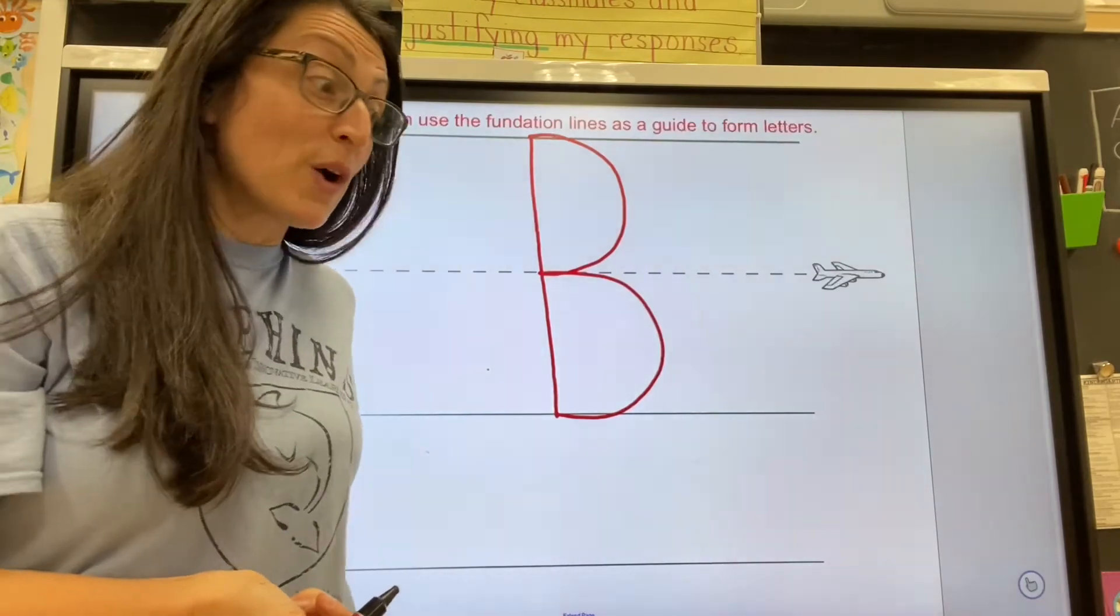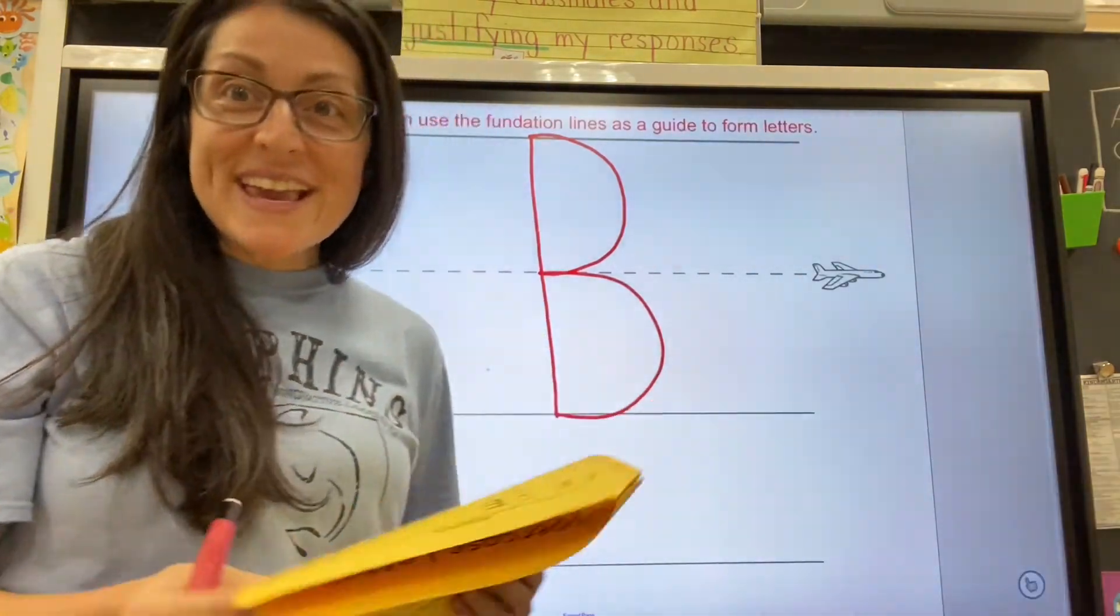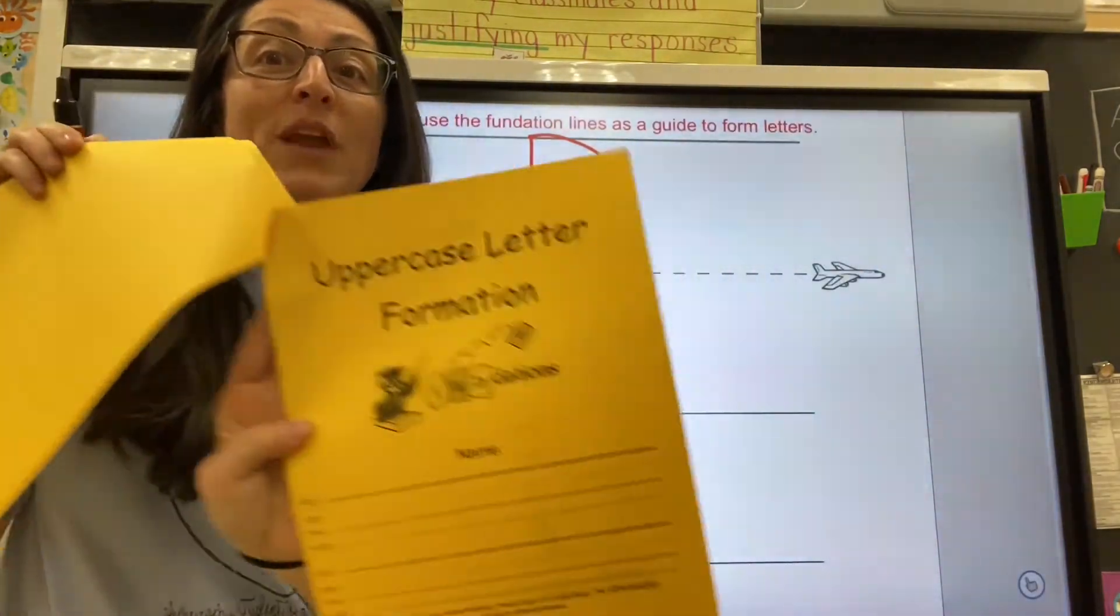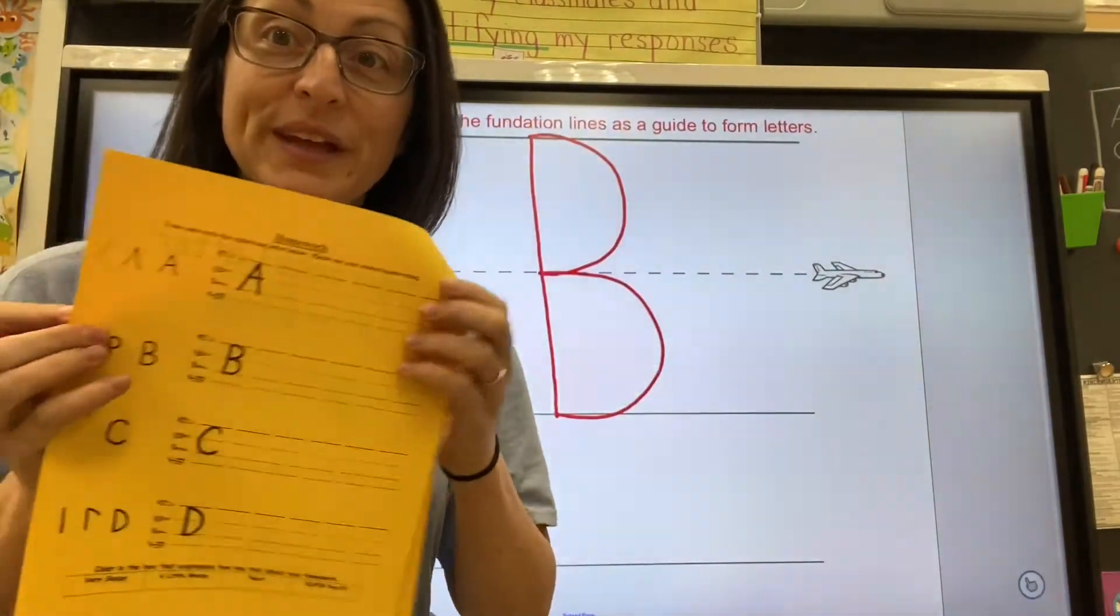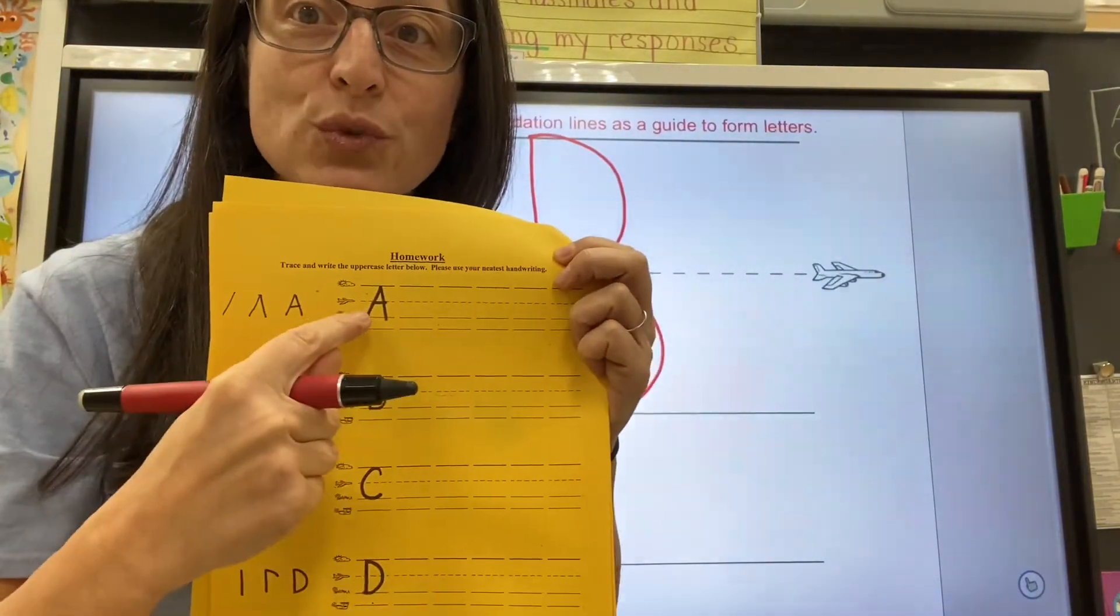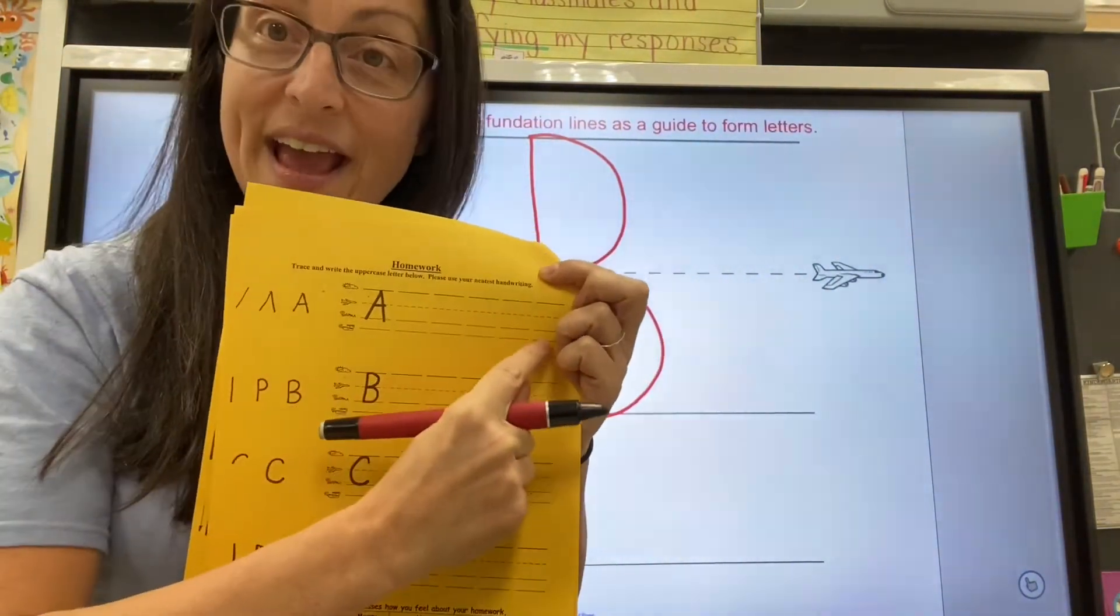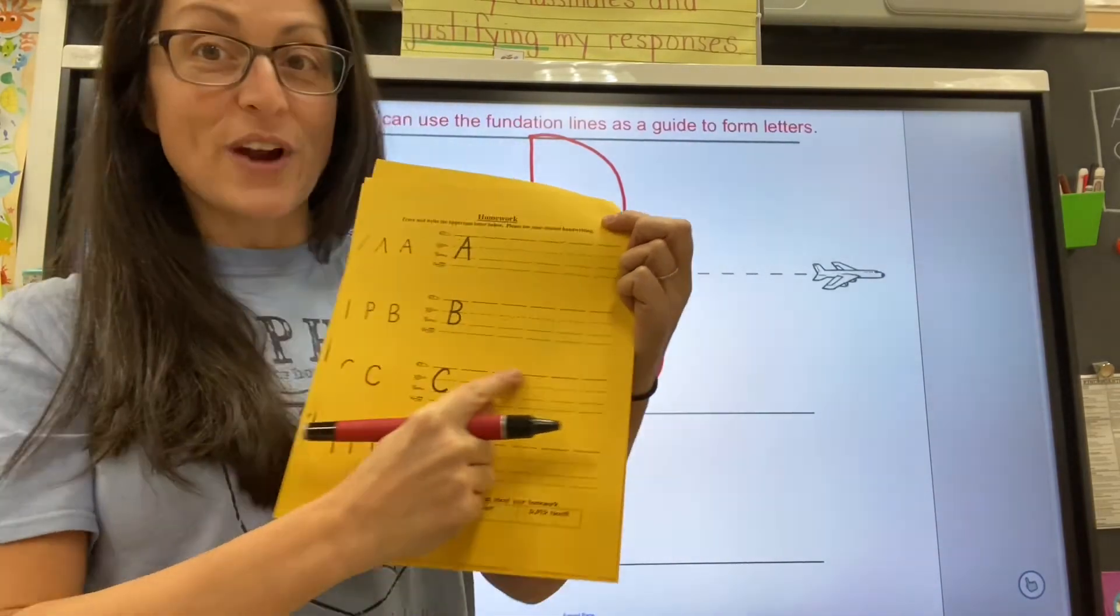You're going to do a great job. So take out your yellow uppercase letter formation booklet and you are going to trace and write the letter A and then trace and write the letter B.